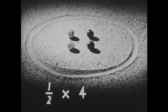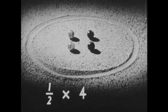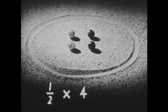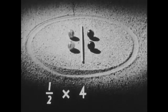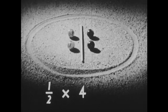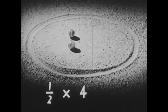Now suppose the problem is one half times four. How many times do we have this group? We do not have it even one time — we have it only one half a time. So the first thing we must do is divide the group into two parts. One of those parts is our answer. One half times four equals two.